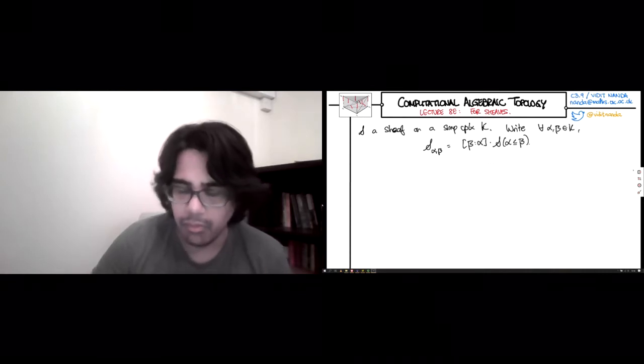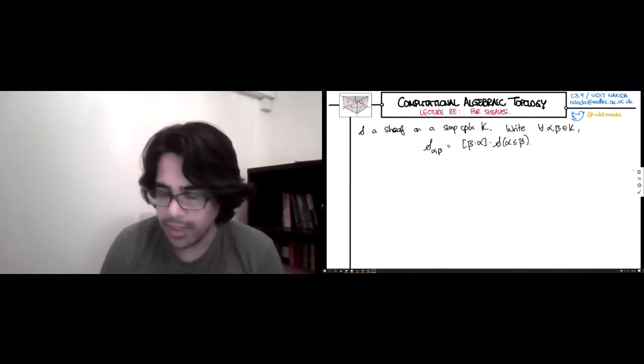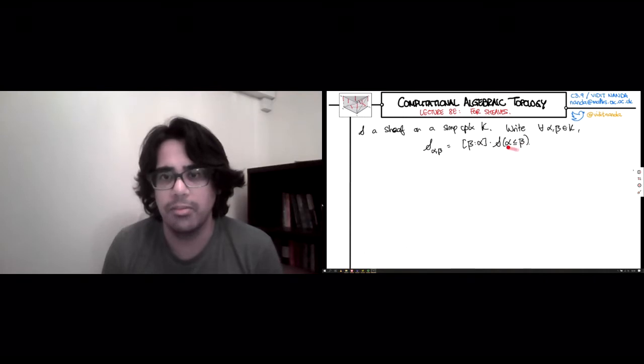As a scalar multiple of the restriction map. So we've talked about this before, but let me quickly say this right hand side, this restriction map doesn't make sense if alpha is not less than or equal to beta. If it's not a face, on the other hand, then this thing is going to be zero anyway. So it doesn't matter. So this thing is well defined for any pair of simplices, alpha and beta, even if this term here is not.